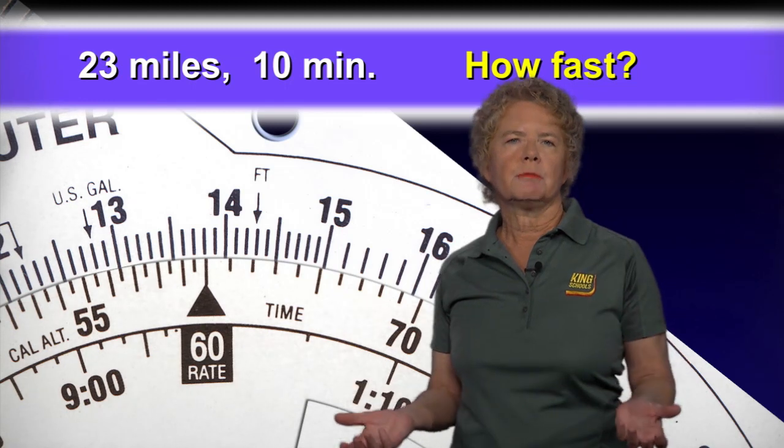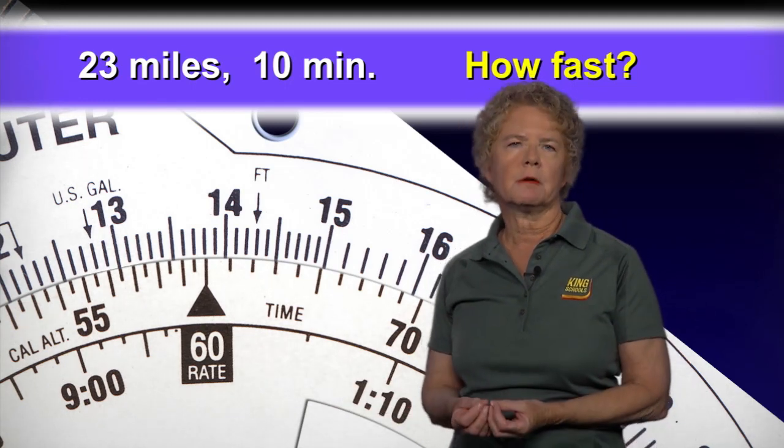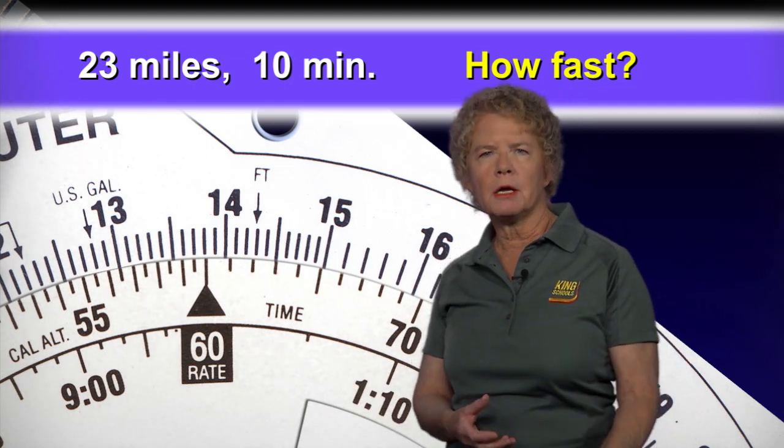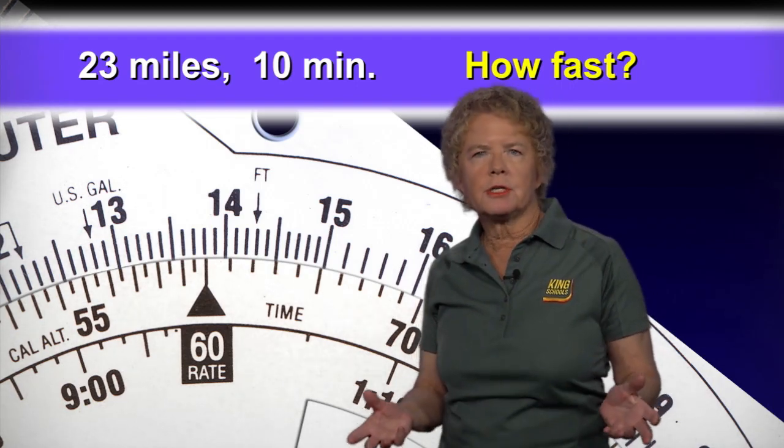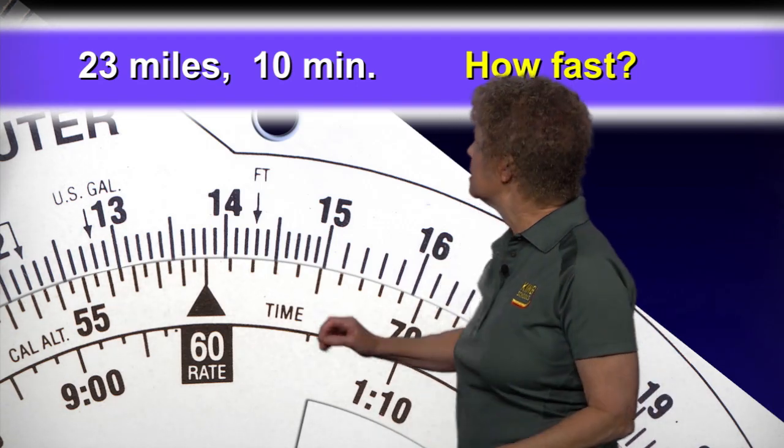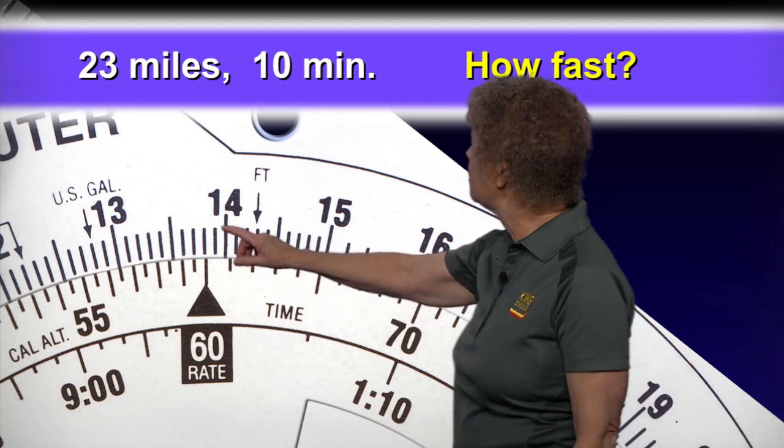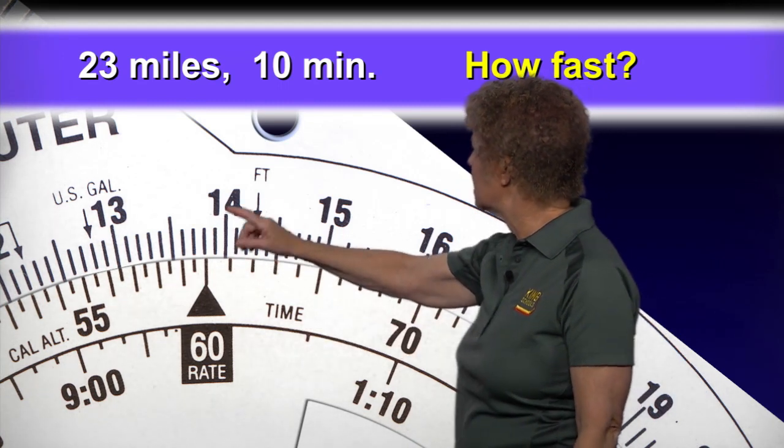And to get that, we simply set up the ratio on the flight computer of how many miles are we traveling in how many minutes. 23 miles in 10 minutes means that in 60 minutes, we'll travel 138 miles.